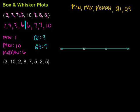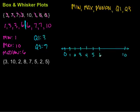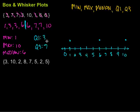I'm going to start with a number line. We're going from one to ten, so I'll go from zero to ten, marking zero, one, two, three, four, five, six, seven, eight, nine, and ten. Now I need to plot each of those values on the number line. I'll start with the minimum at one, then the maximum at ten, the median at six, the first quartile at three, and the third quartile at seven.